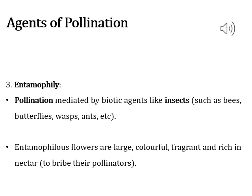Entomophily is pollination that takes place by insects. The majority of flowering plants use animals as pollinating agents — examples include bees, butterflies, flies, beetles, wasps, ants, moths, birds, bats, primates, and other arboreal animals, rodents, and reptiles. Pollination by insects, particularly bees, is most common. Often the flowers of animal-pollinated plants are specifically adapted for particular species of animals.